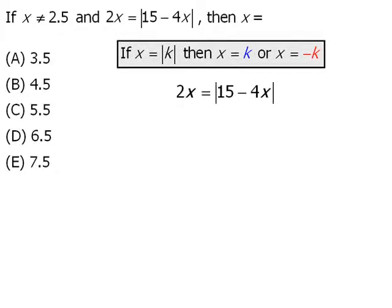If we apply this rule to this equation, we get either 2x equals 15 minus 4x or 2x equals negative 15 minus 4x.